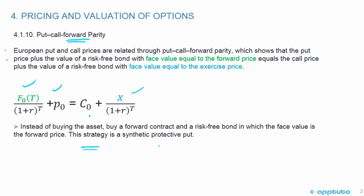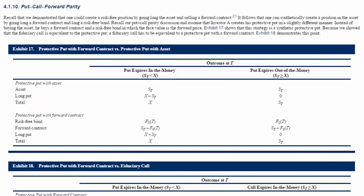This strategy is a synthetic protective put. So we're just going to take a second here to look at the e-book with regards to put-call forward parity. Recall that we demonstrated that one could create a risk-free position by going long the asset and selling a forward contract. It follows that one can synthetically create a position in the asset by going long a forward contract and long a risk-free bond.